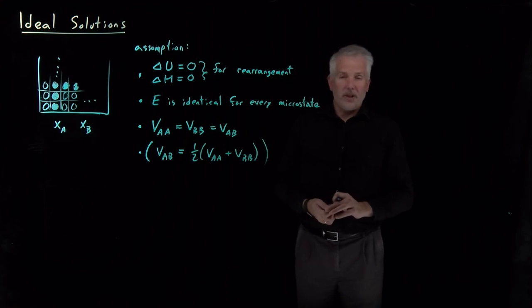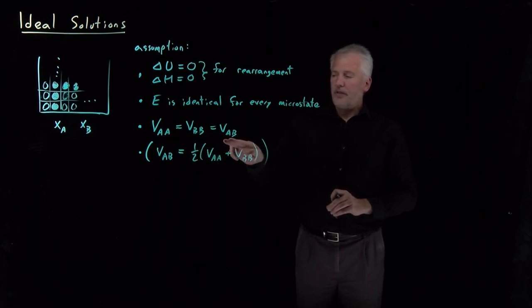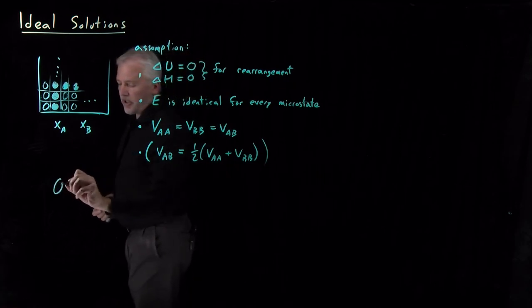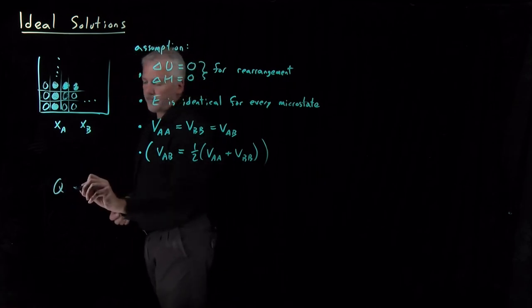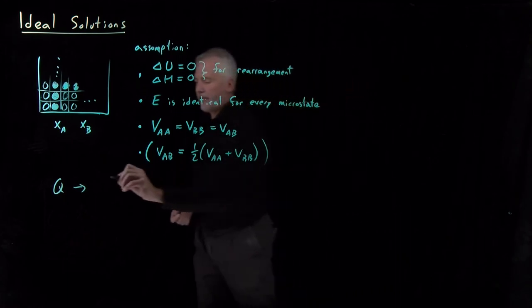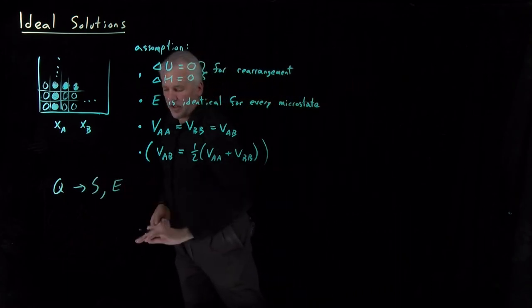So what we would normally do at this point, or at least what we've done in the past, once we've defined a model, I've defined some energy of interaction for the system, we could write down a partition function for the system